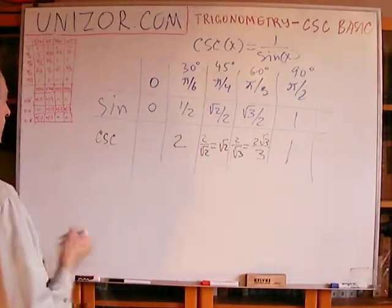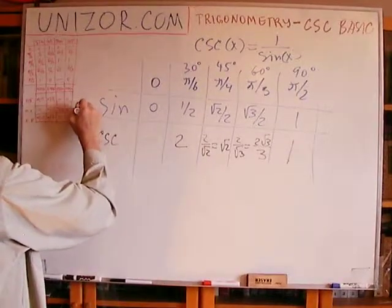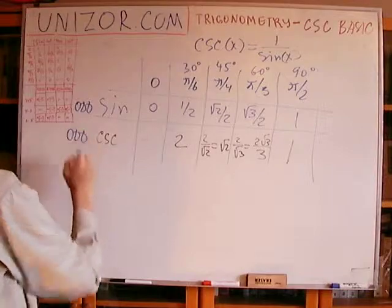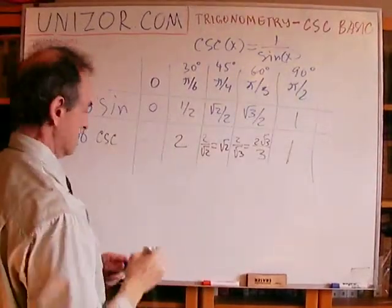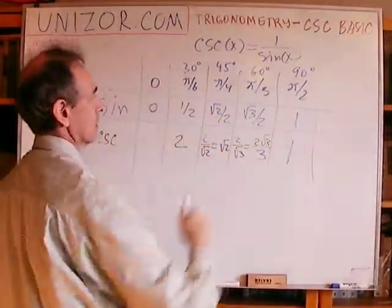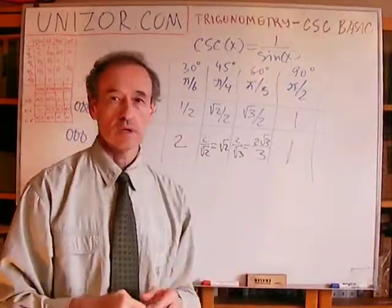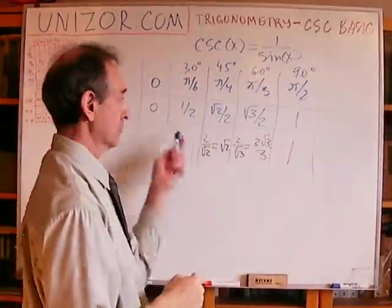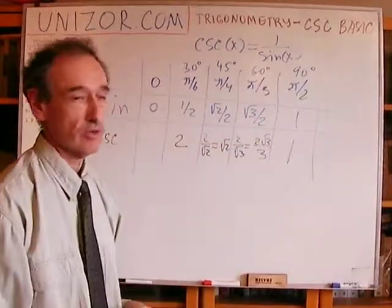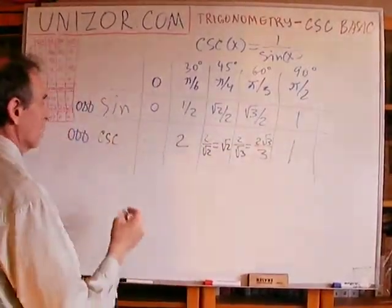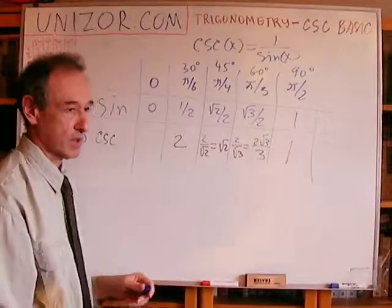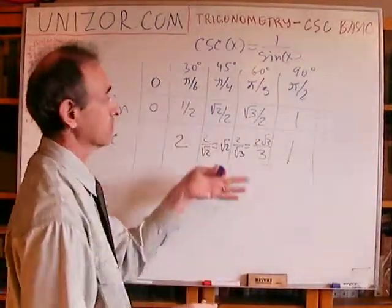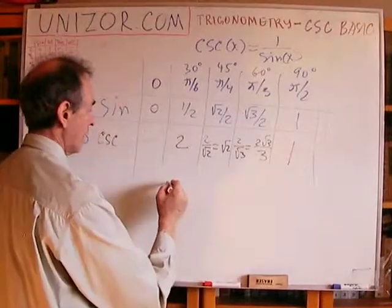Now, sine is an odd function. That makes cosecant odd function as well. So knowing these values, you can always calculate what's the values for the corresponding negative angles. It will be just negative these values. Also, you know that cosecant is a periodic function, since sine is a periodic function, and the period is 2 pi, so you can add 2 pi, subtract 2 pi.